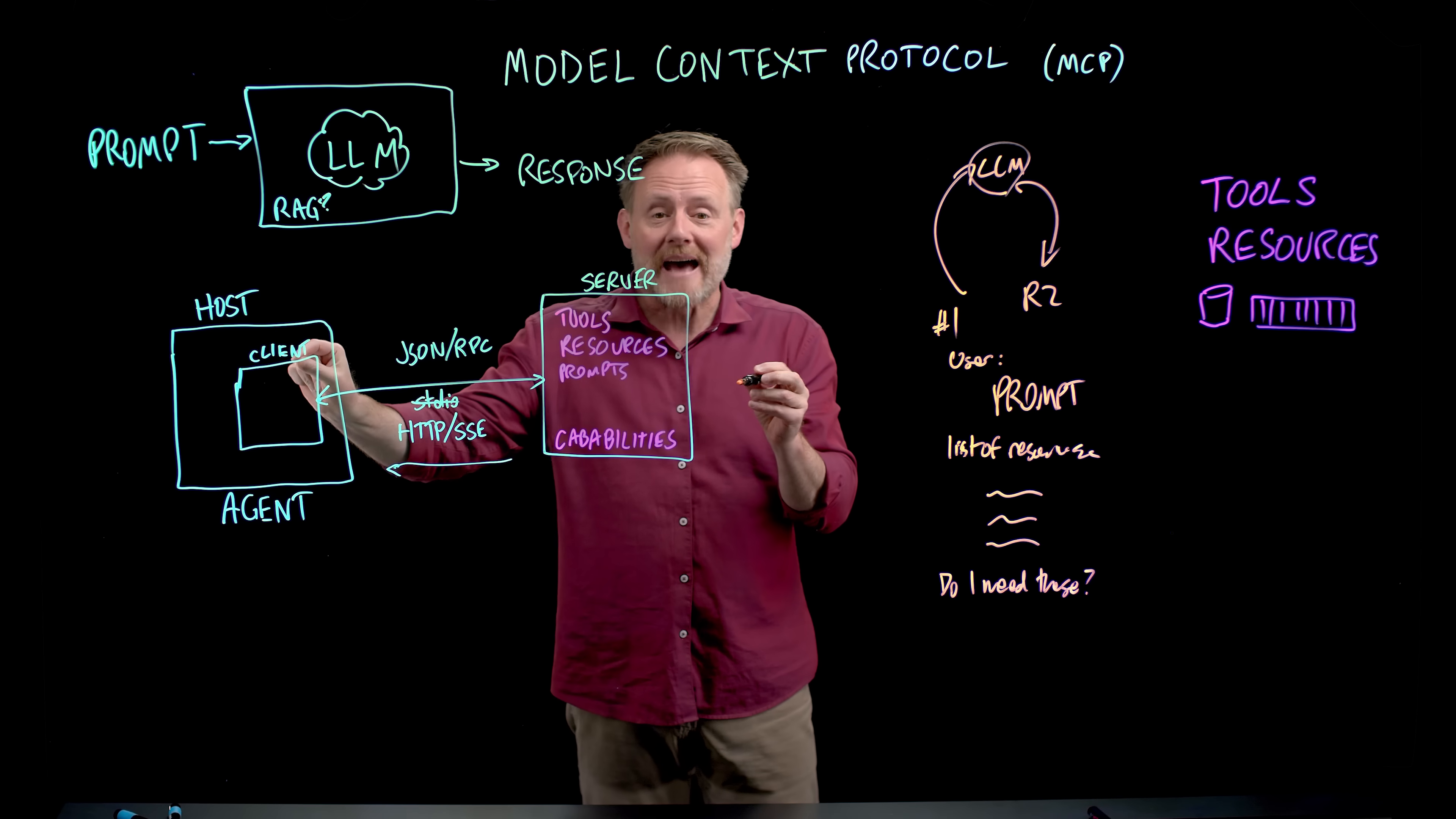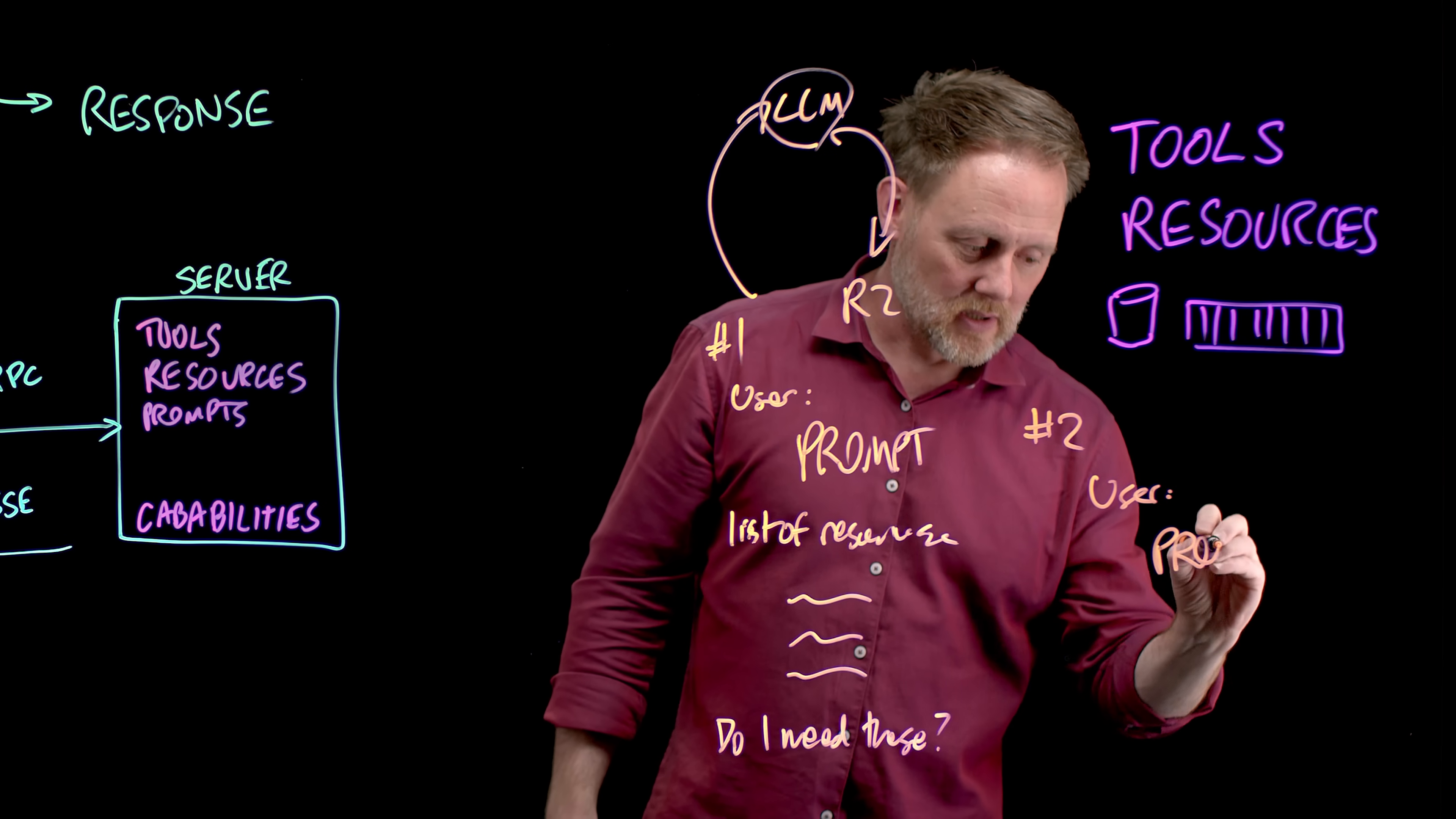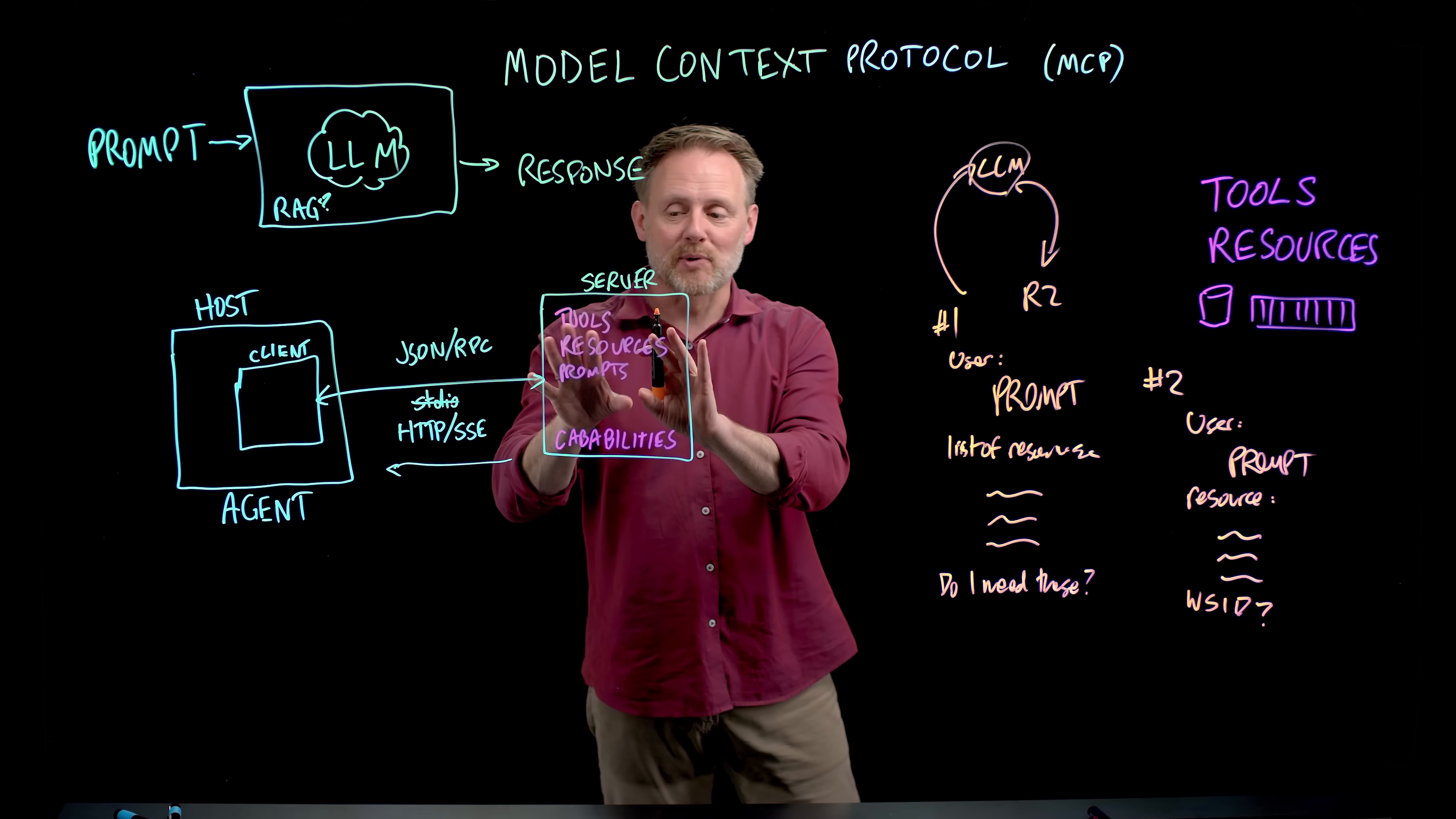And then I will get that text back or whatever that data is. I'll get that back and serialize it as text or otherwise attach it to my next prompt, where I say again, here is my user prompt. And now here is the resource data. And I provide that data in detail and then ask, what should I do as a result?